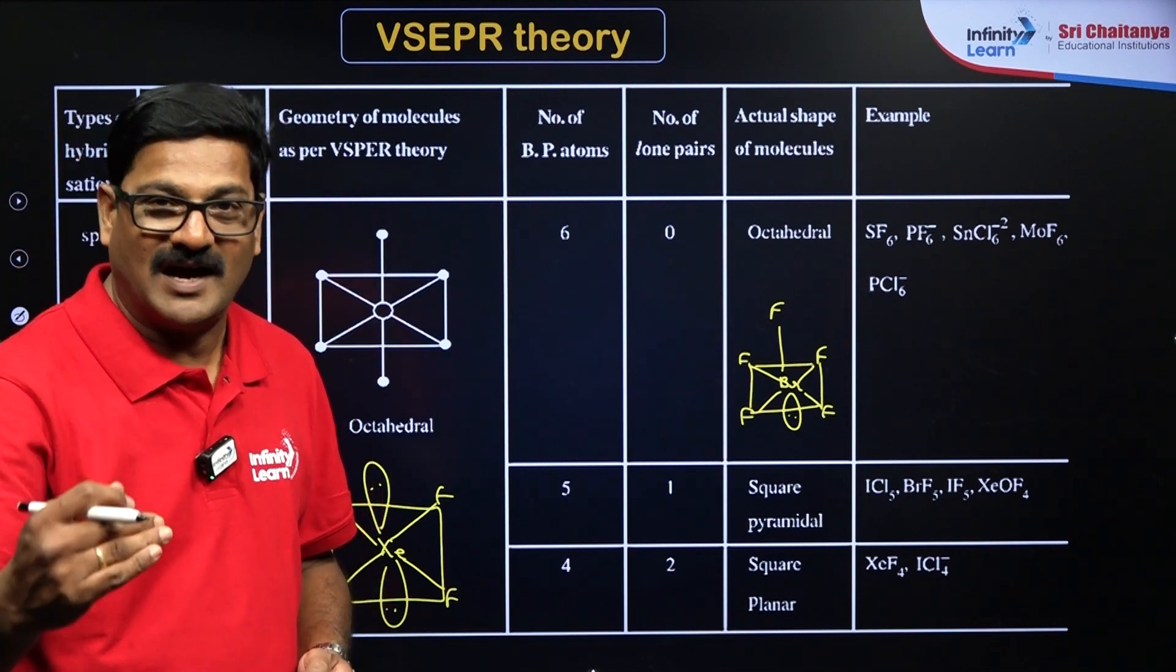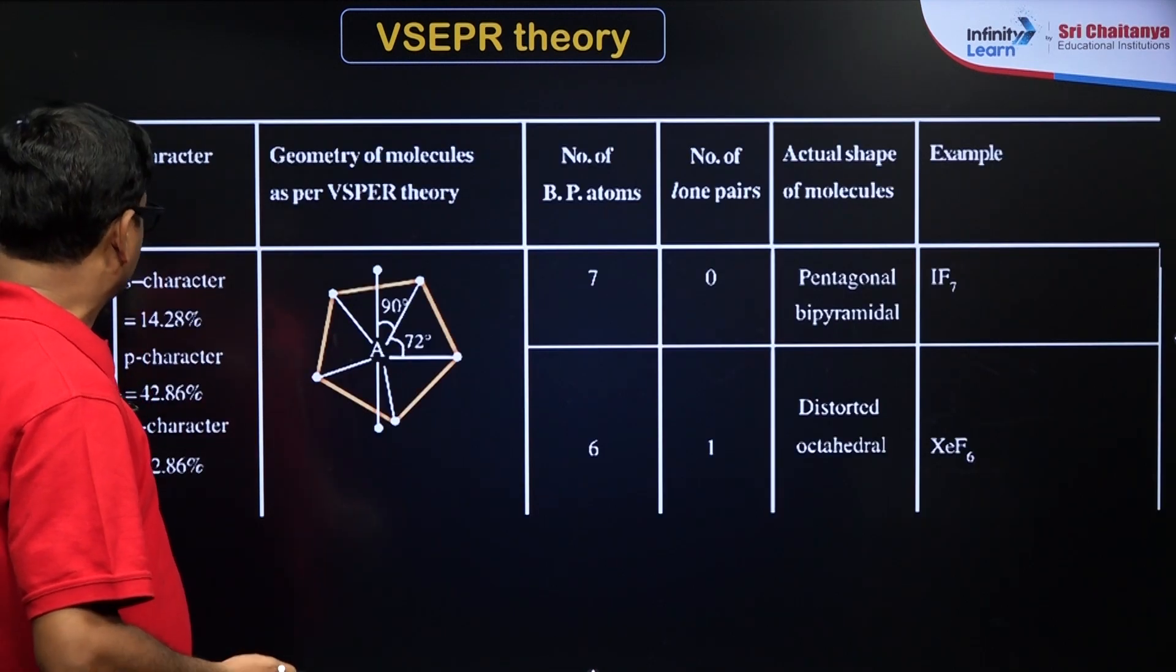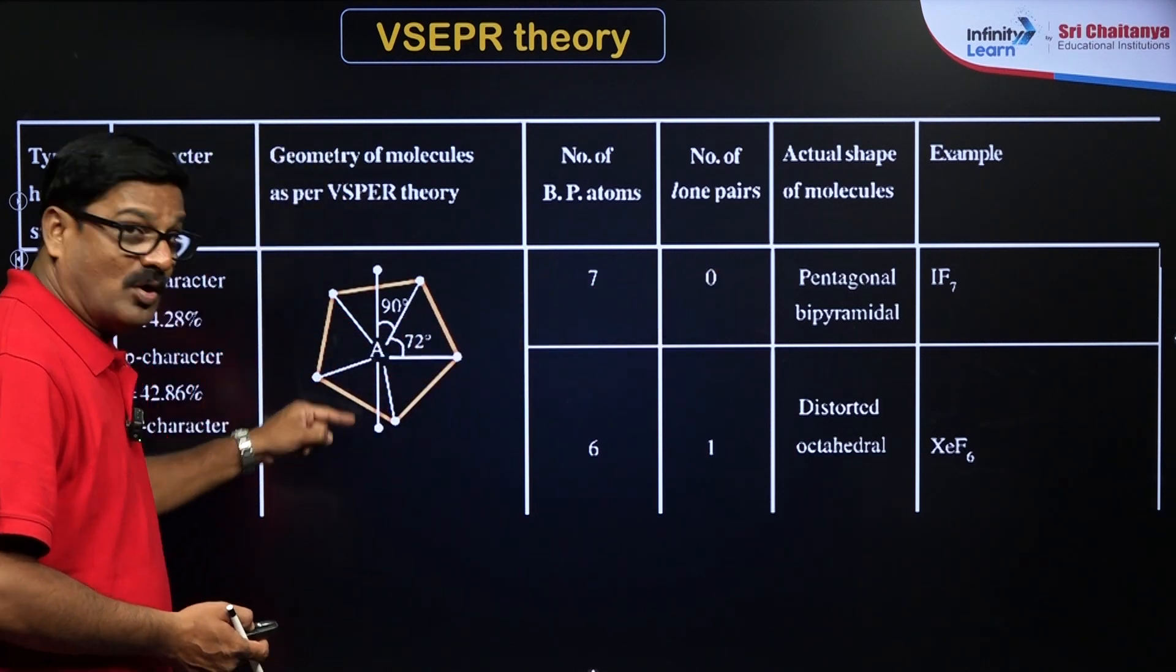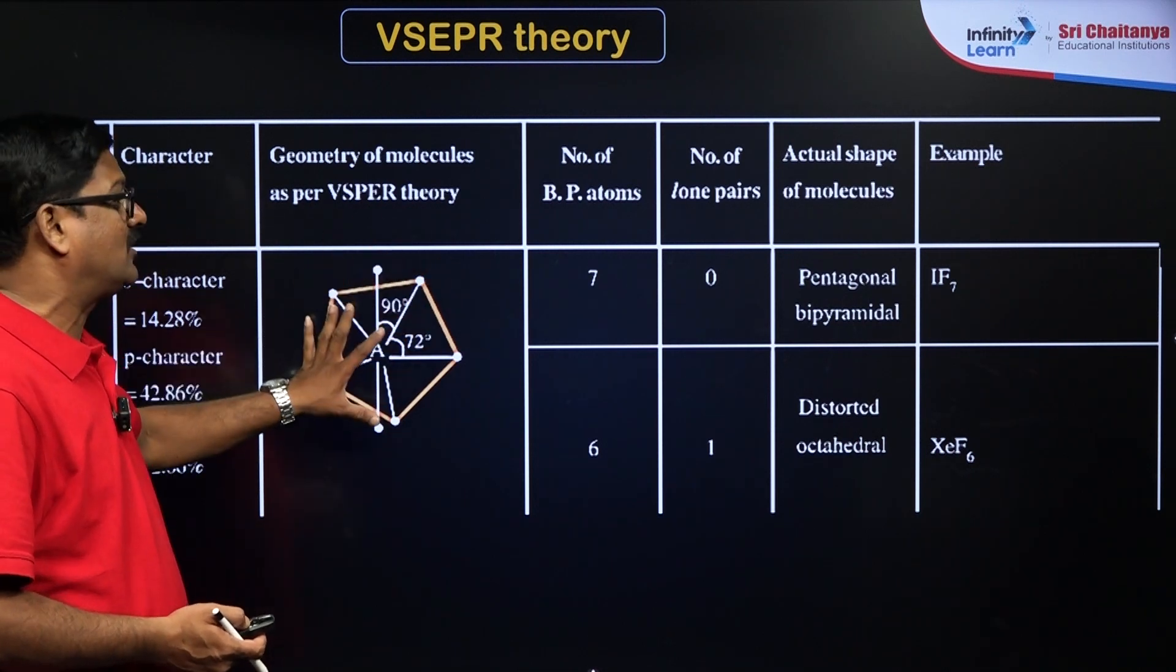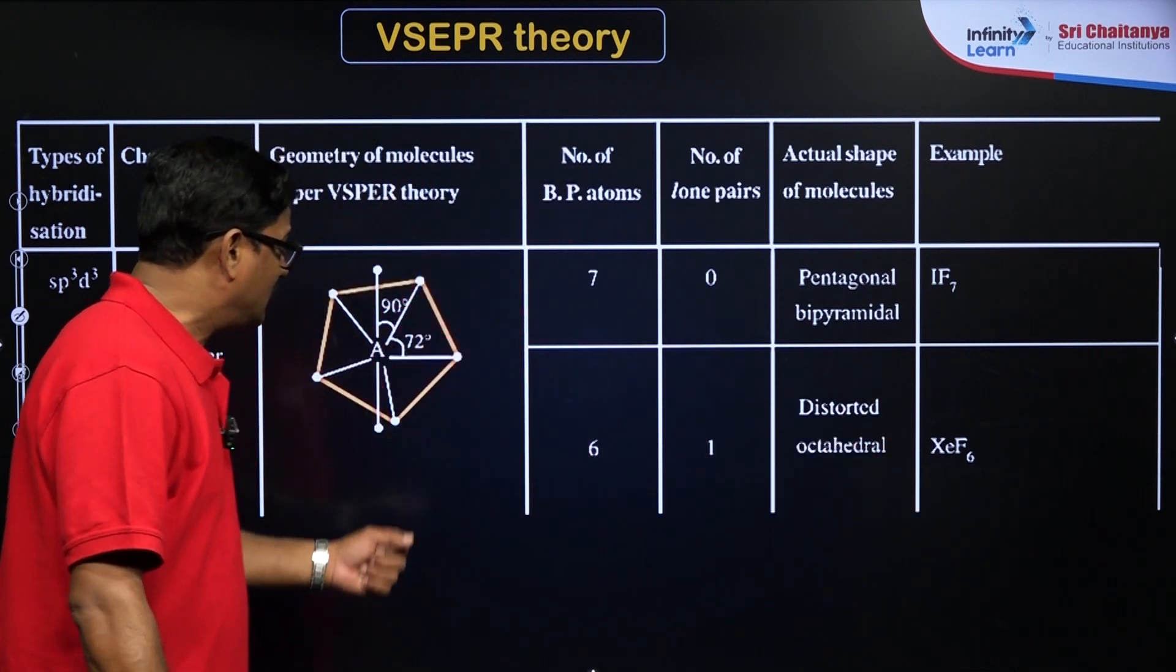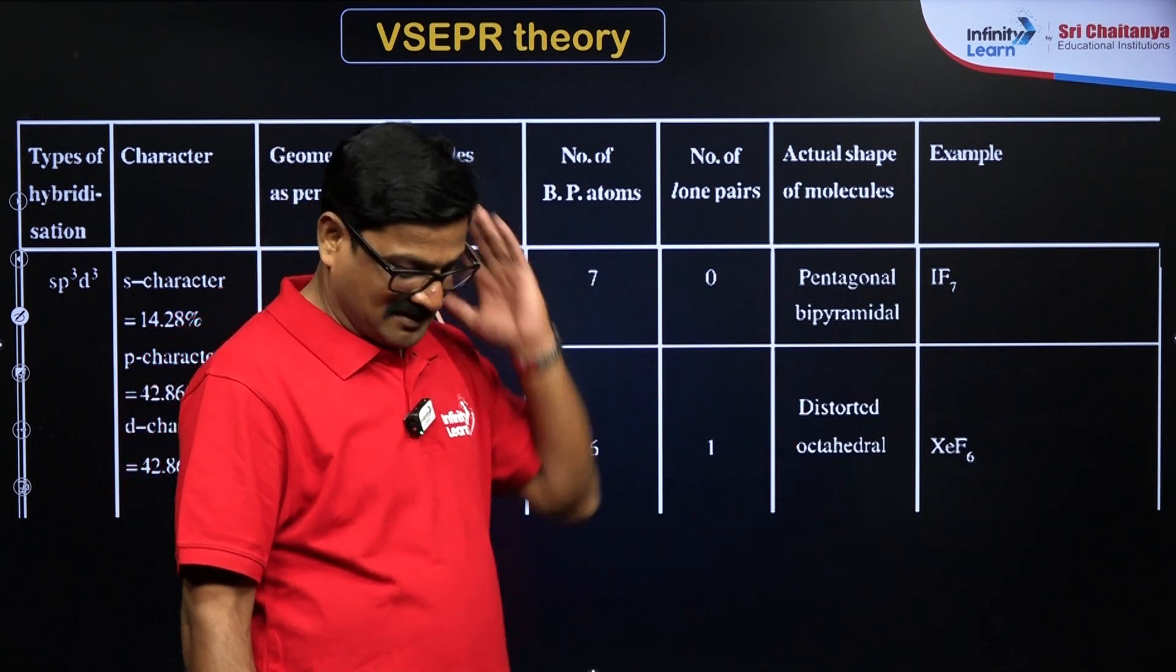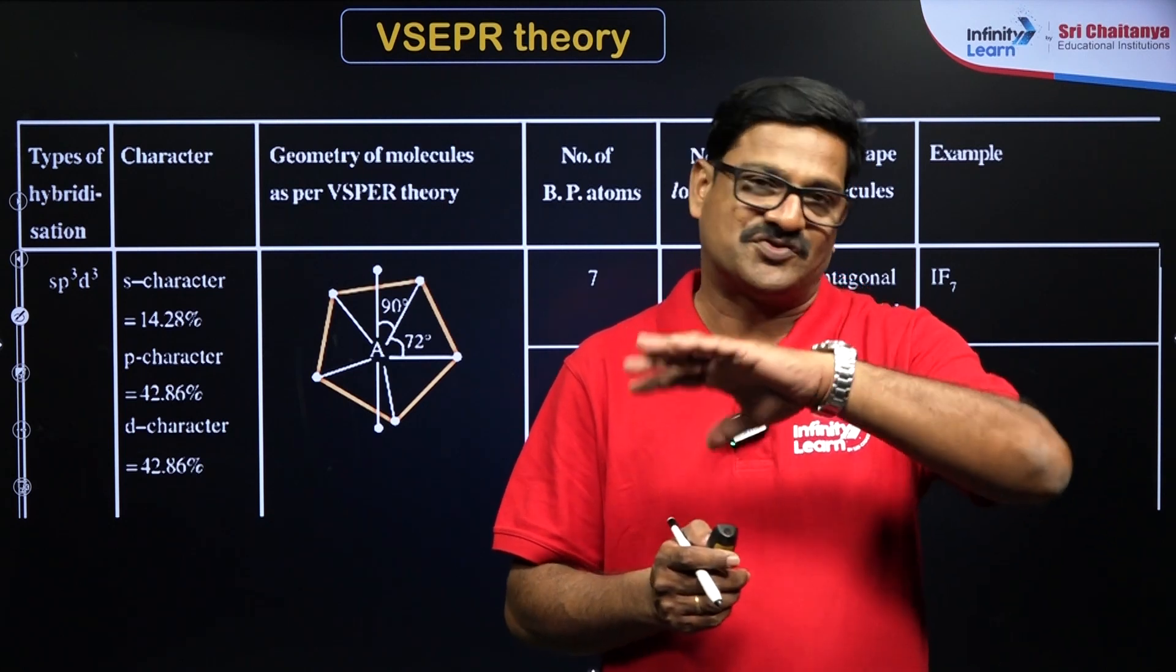Like that, you just go in that sequence manner, you will understand everything. And at last, SP3D3. In that SP3D3, seven bond pairs and zero lone pairs, it is going to be pentagonal bipyramidal. IF7 is going to be the example. And six bond pairs and one lone pair, this is distorted octahedral. XeF6 is going to be the example. So based on this simple methodology, you can calculate the steric number. Steric number equals total lone pair plus bond pair, and the steric number decides the geometry, and the shape is decided by only bond pairs of electrons.